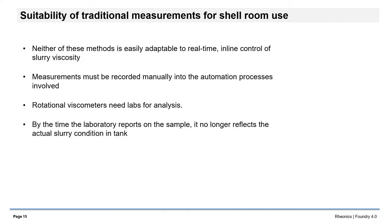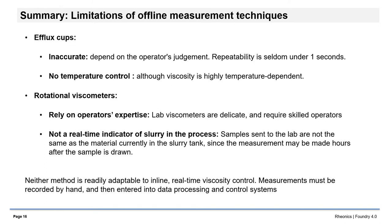Neither of these methods is easily adaptable to real-time, inline control of slurry viscosity. Cup measurements interrupt the flow of the shell building process. The measurements must be recorded and entered manually into whatever automation processes they are linked to. Rotational viscometers are delicate instruments that prefer labs to shell rooms. By the time the laboratory reports on the viscosity of a slurry sample, it no longer reflects the actual condition of the slurry in the tank.